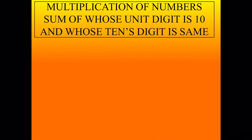Now let's do multiplication of numbers sum of whose unit digit is 10 and whose tens digit is same. That means with this method we can multiply only those numbers sum of whose unit digit is 10 and whose tens digit is same.